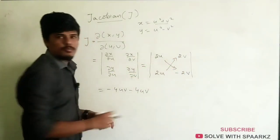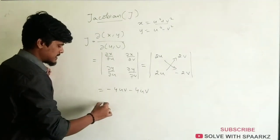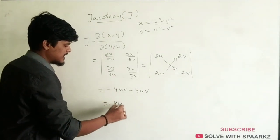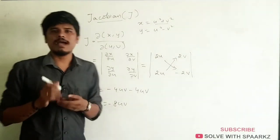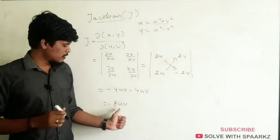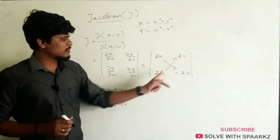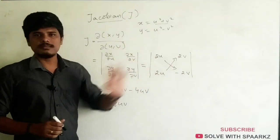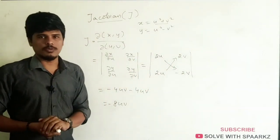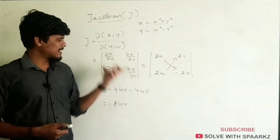The result gives minus 2v. So, if we have the answer, using minus by minus, we get minus 8uv. It's very simple — just multiply the terms: minus by minus gives a positive, multiplied by minus gives the final result. So, we can understand this as the Jacobian.